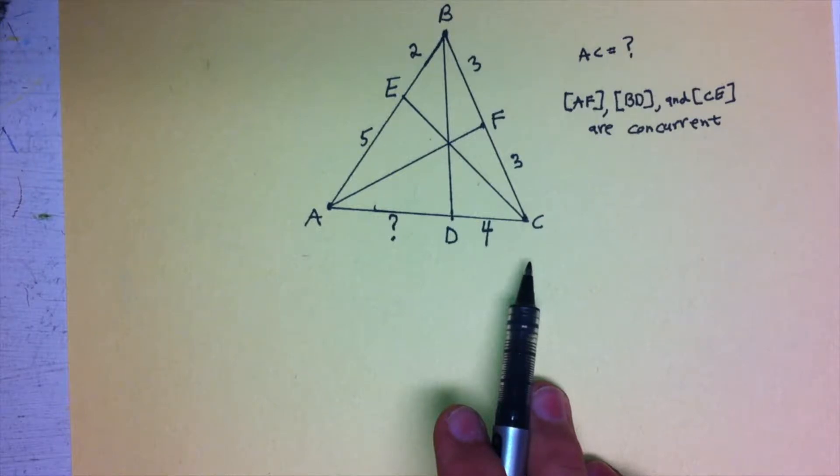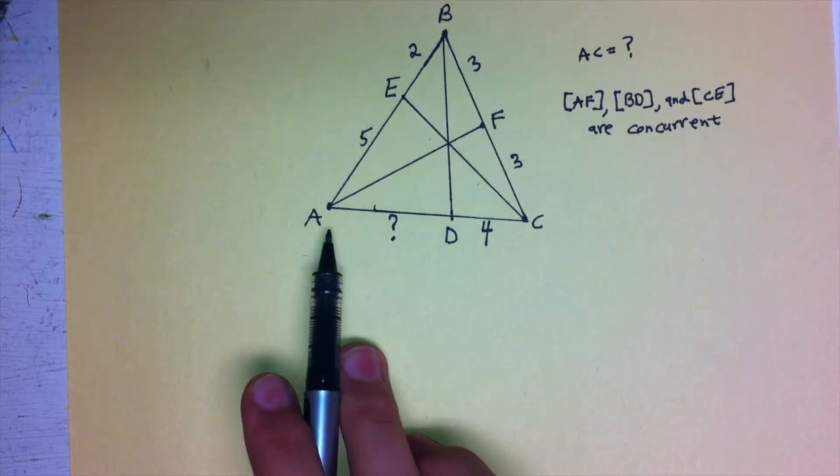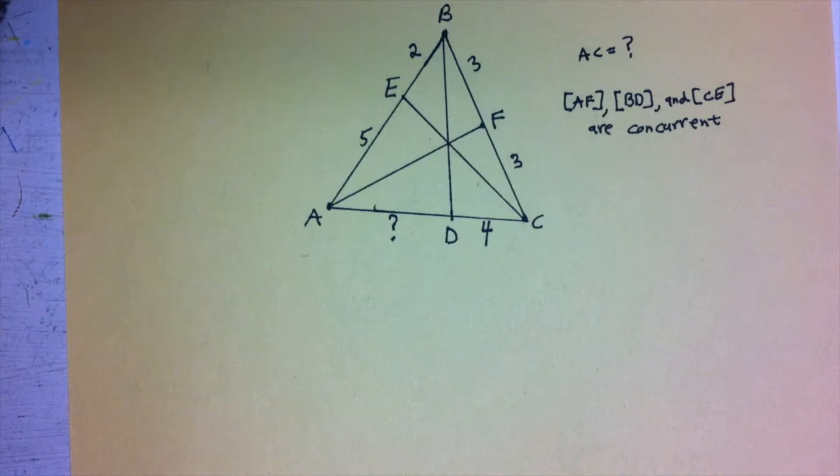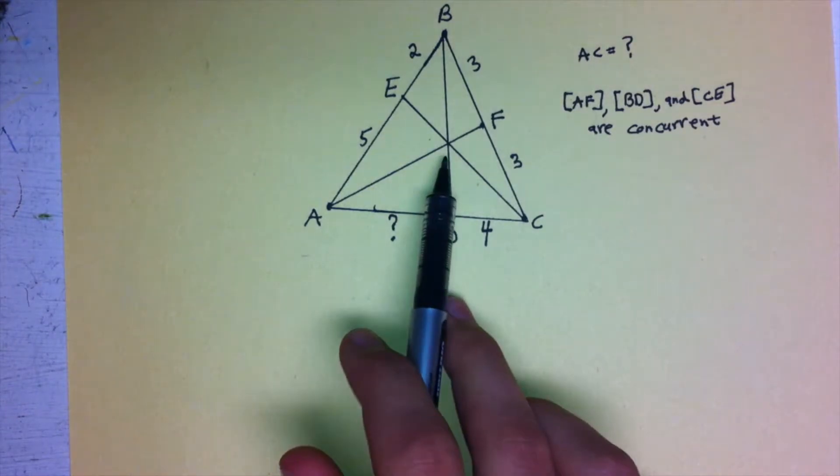Remembering back to the last video, in order to set up Ceva's Theorem, we start at a vertex and then go around the triangle, alternating between multiplication and division, at least for the case when the intersection point is within the triangle.